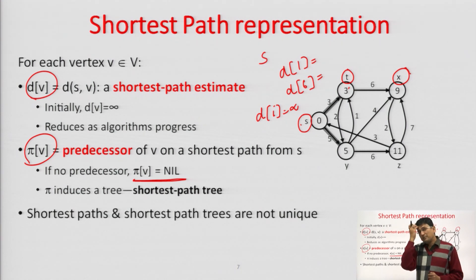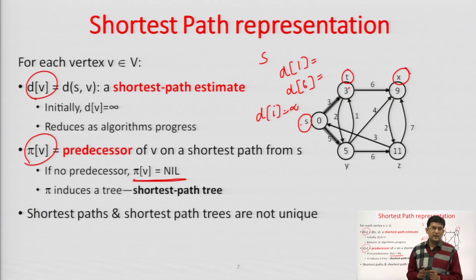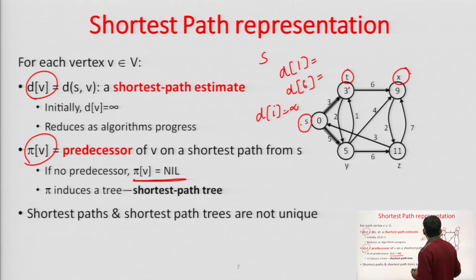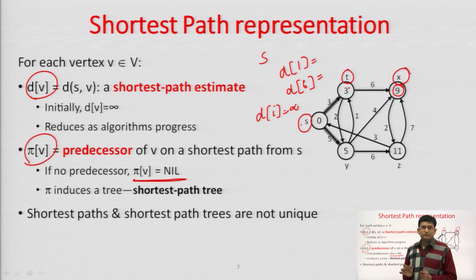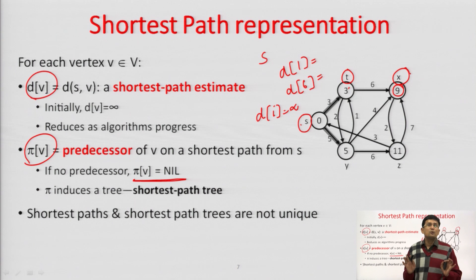We must remember that whenever we are finding out the shortest path, the shortest path is not unique — there may be multiple shortest paths possible. For example, in the given graph, if you have to go from S to X, one path is S to T then T to X with cost 9, and another path is S to Y then Y to X, which also has cost 9. So there are two paths possible, and Dijkstra's algorithm does not guarantee a unique path.